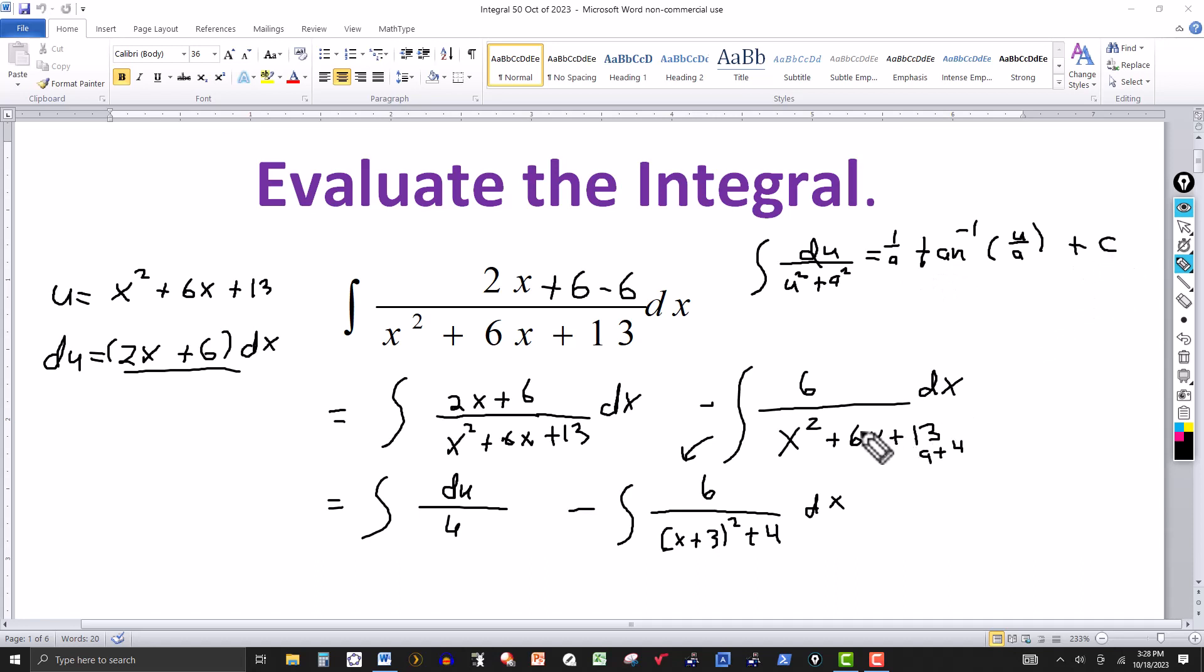Now in our case, the u is going to be, once I write it in this form here, if I complete the square here, the u will be x plus 3, and the a would be 2. Because 4 is 2 squared, so the a would be 2. Now we're set.